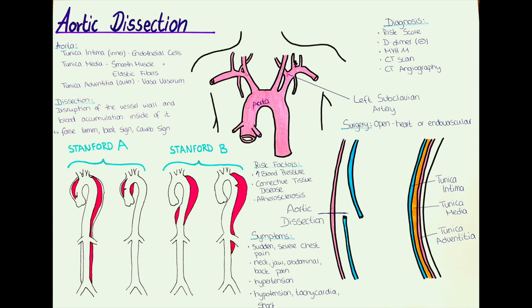In an aortic dissection we can often see the beak sign — a sharp angle at the edge of the false lumen which is formed by the blood flowing into the wall of the artery. It is also often possible to see the cobweb sign in an aortic dissection, where there are remnants of the tunica media which form tissue strands across the aortic dissection.